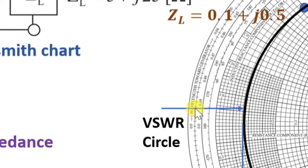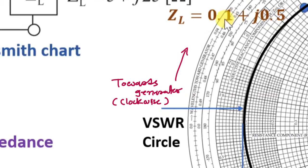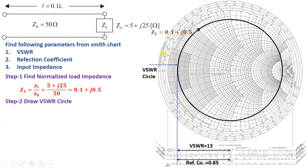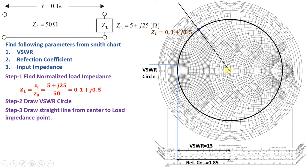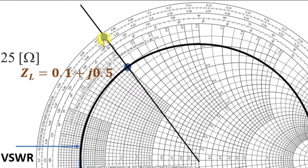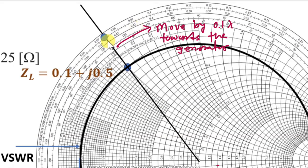First, we stretch a line from the center to ZL. Once that line is drawn, we move in the clockwise direction towards the generator by 0.1 lambda. On the outer scale, the load point lies between 0.07 and 0.08. Moving clockwise by 0.1 lambda, we arrive at a new point between 0.17 and 0.18 on the wavelengths-toward-generator scale.